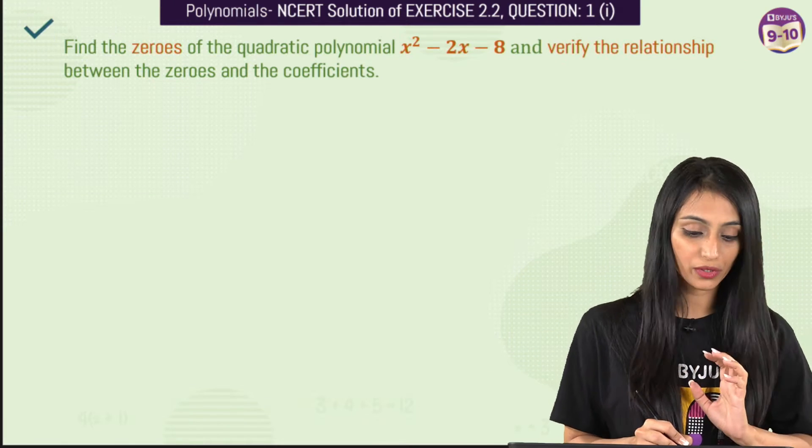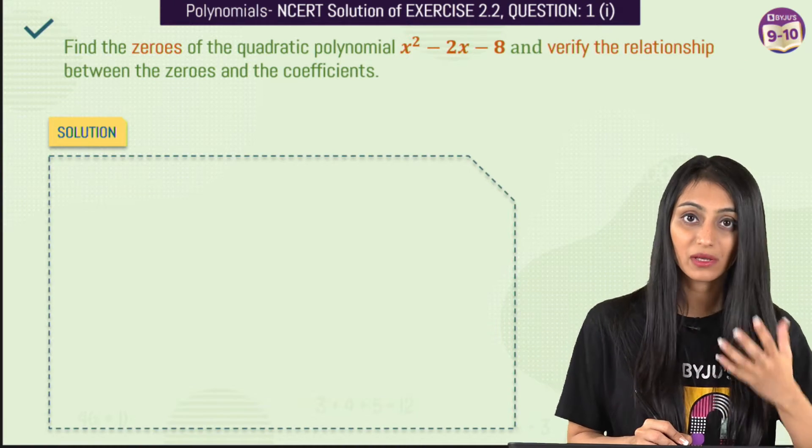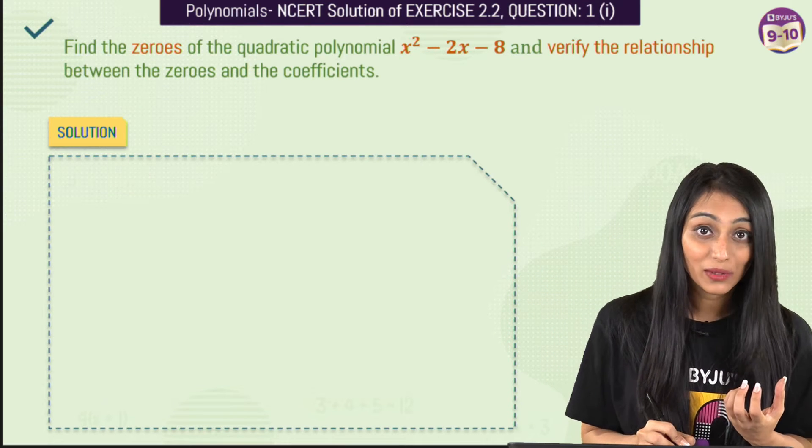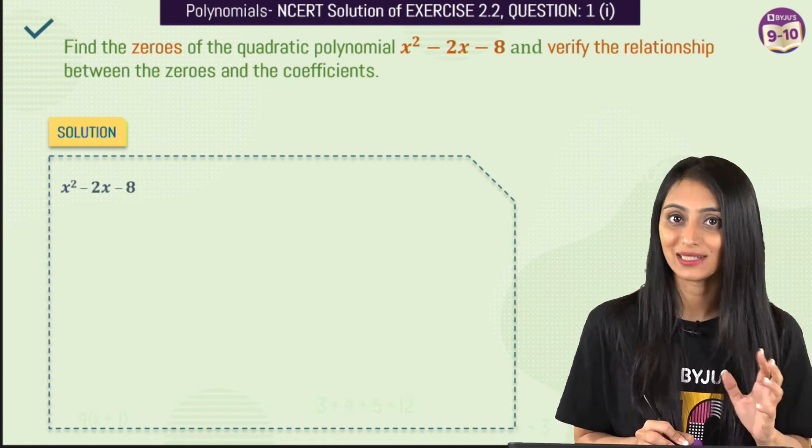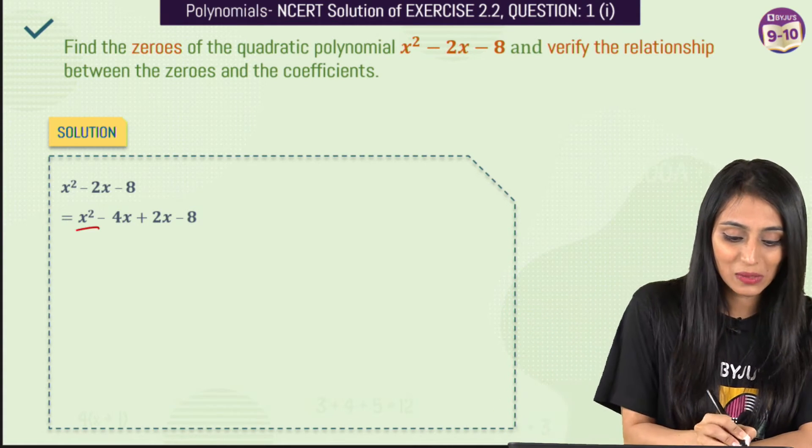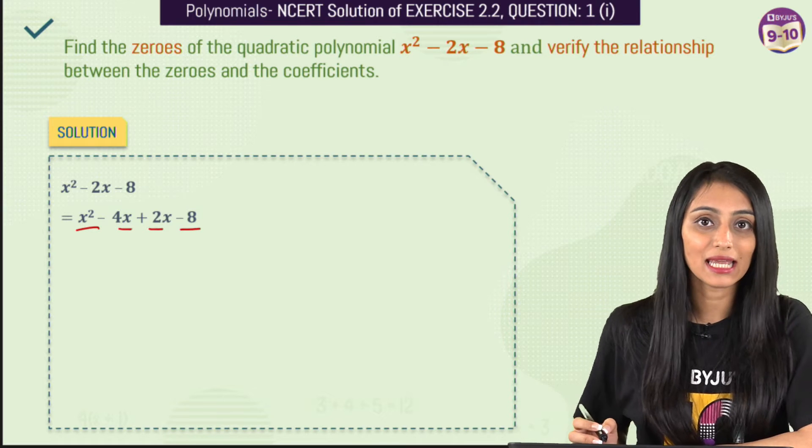So what we will do here is, first let's find out the zeros because we would require them to verify the relationship. So this is a quadratic polynomial, all we have to do is just the middle term splitting. Middle term splitting is very simple, we all know how to do this. That's going to be x squared minus 4x plus 2x minus 8.